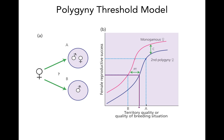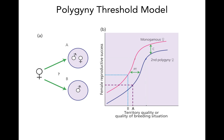You can imagine that if instead male A's territory was only a little bit better than B — not far above — then comparing the two fitness payoffs, it's much worse for a female to choose to be polygynous with this male than it would be for her to be monogamous with B. You can see that this particular point on the x-axis doesn't exceed the polygyny threshold. So in this case she should not choose polygyny — she should choose to be monogamous with male B.